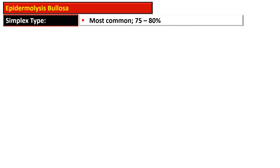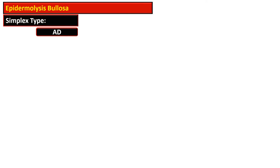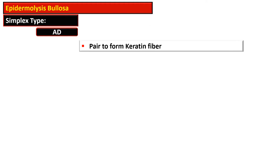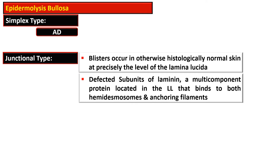The simplex type of Epidermolysis Bullosa is the most common, present in 75 to 80 percent of cases. It is inherited as an autosomal dominant disorder and involves mutation in the genes encoding Keratin 14 and Keratin 5, which pair to form keratin fibers.